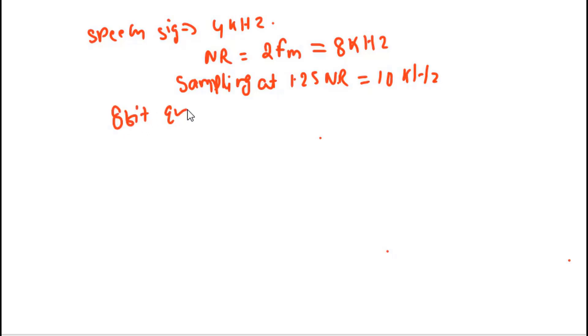In this question, you have a speech signal which has 4 kHz maximum frequency. The Nyquist rate will be 2 times fm, which is 2 into maximum frequency component in that signal. This is 2 fm and equals 8 kHz. You are sampling at 1.25 times Nyquist rate, so this becomes 10 kHz. Also, you are quantizing it using an 8-bit quantizer, which implies your n equals 8 bits per sample.